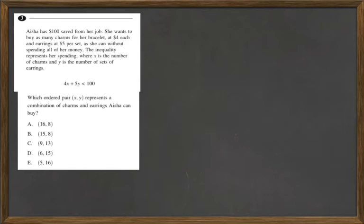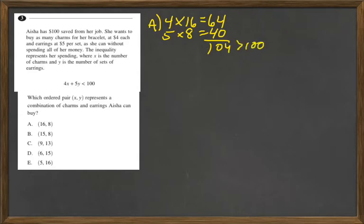So we're just going to plug and chug here. For A, we have 16, and that's just going to get plugged in for the X, and then the 8 is going to get plugged in for the Y. So we would have 4 times 16, which would equal 64, and then we have 5 times 8, which is going to equal 40, and that's going to add up to 104, which is greater than 100, so it cannot be A.